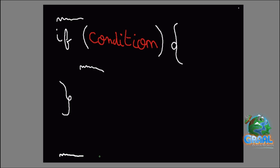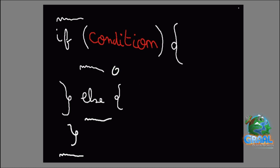If you want to create a diverging path between situations, you can use the else keyword. In this situation, if the condition is true, that snippet of code happens and then continues on. But if the condition is false — the other case — the else block happens and then continues. That's basically how you create branching paths using an if statement.